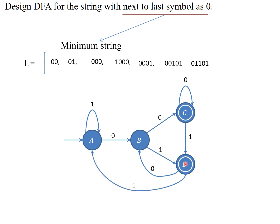For example, zero zero one one zero one is accepted, and so on. All possible strings satisfying the condition that the next-to-last symbol is zero are accepted. In order to ensure this diagram is a complete DFA, look at state A — it has transitions on zero and one.